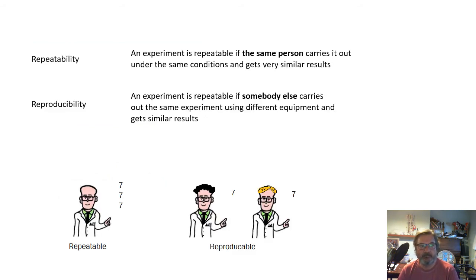Here are two words which you definitely need to know the meaning of: repeatability and reproducibility. If an experiment is repeatable, now the key is repeatable is the same person. If the same person carries out the experiment under the same conditions with the same equipment and gets very similar results, then it is repeatable. So the same person does the experiment again, gets the same results, it's repeatable.